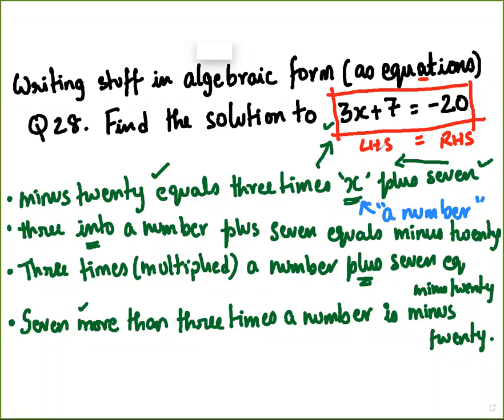But the problem here is that the statement itself, if you read it out - and I suggest that when you write down the statement, read it out aloud and listen to yourself. When you say minus 20 equals 3 times x plus 7, it is not a nice English sentence. It is kind of a little clunky. It sounds like a mathematical statement, not so much as a statement that you would make in English. So where is the problem? We could approach it in any different way, but we try to sort of fix on one thing. So the one that we came upon was the letter X.